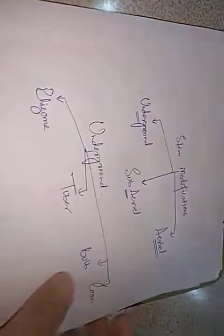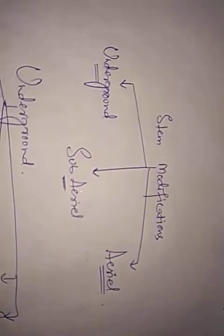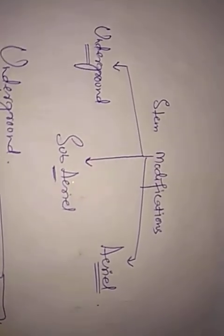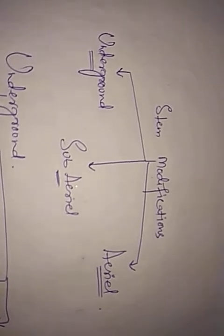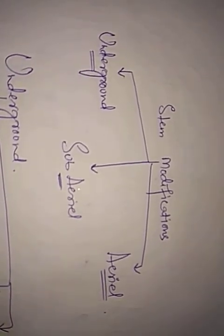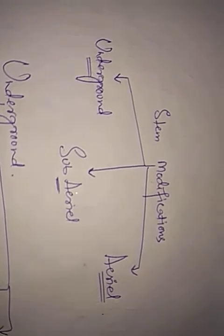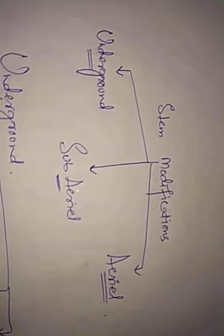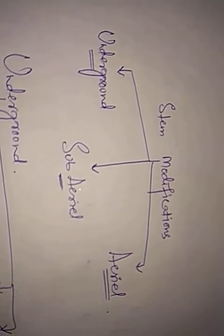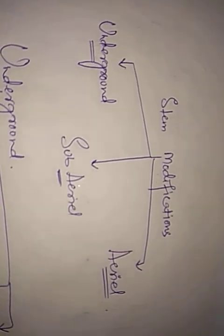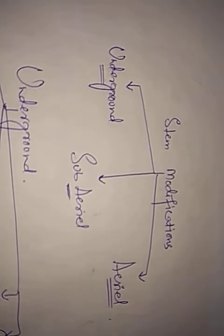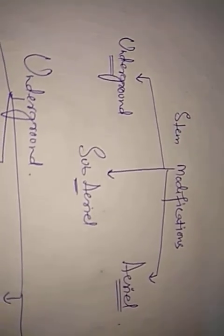These are all the forms of stem — we discussed aerial erect stems and weak stems. Now after this we talk about stem modifications. Broadly classified, they are of three groups: underground stem modifications, sub-aerial stem modifications, and aerial stem modifications. These stem modifications will be discussed in the next lecture.